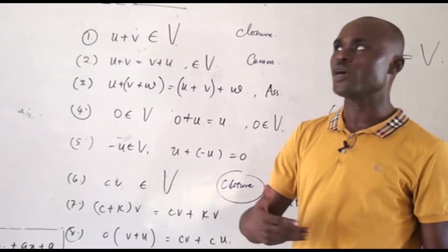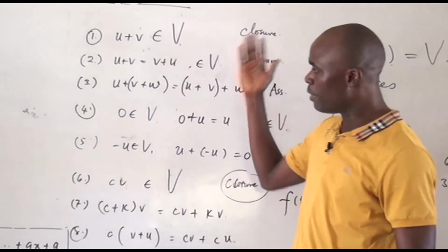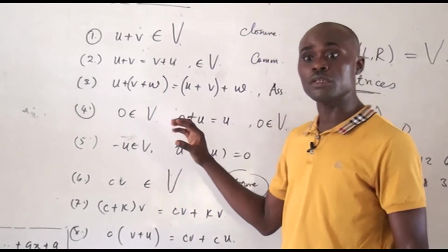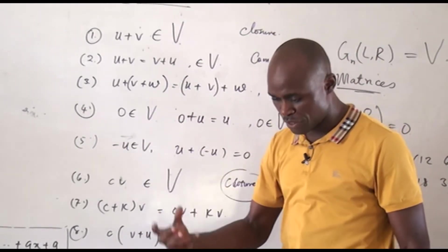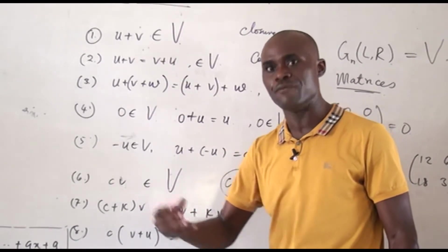In the first part of the video, I defined a vector space, what the vector is, and I listed about nine to ten axioms which actually proves that the space is a vector space and the members of the space or the set are vectors.